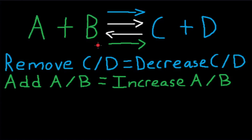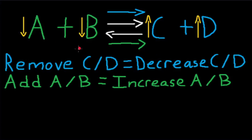So what does a shift right do? A shift right produces more products and in the process consumes more reactants. This means C and D both increase in concentration while A and B decrease in concentration. A shift right points at the products, so the products increase, and it doesn't point at the reactants, so the reactants decrease.